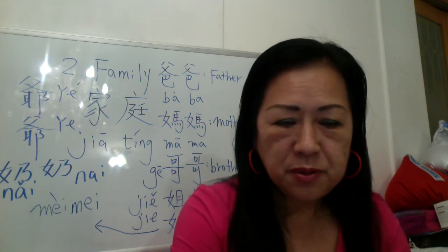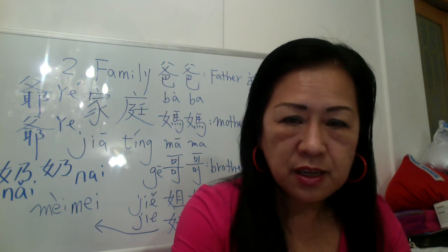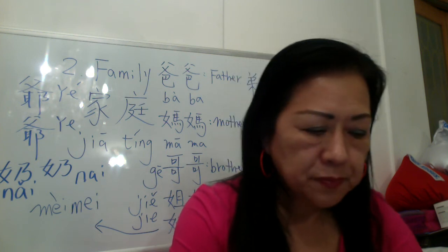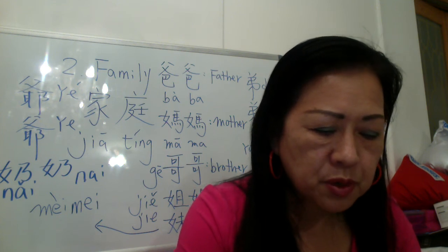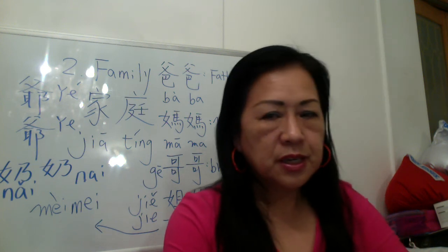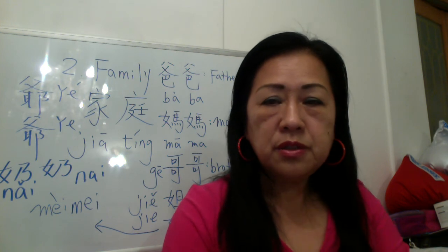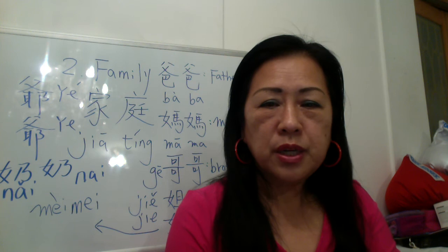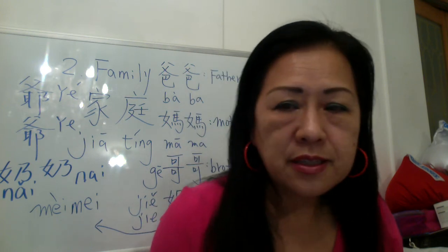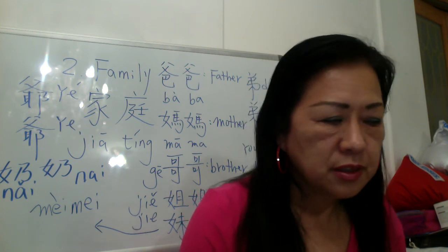Page 45 — measure word 个, very important. If you describe a person you say 个: 一个人, 一个学生, 一个老师. 个 is the single most common measure word in Chinese. It can also sometimes substitute for other measure words — for example, 一个苹果 (one apple), 一个橘子 (one orange).